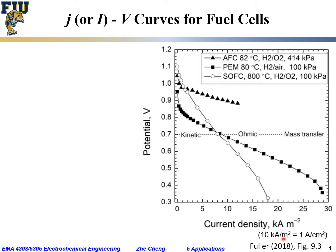Note that 10 kilo amp per meter square is roughly 1 amp per centimeter square. You may find people use either kilo amp per meter square or amp per centimeter square — both are quite commonly encountered in fuel cell testing.